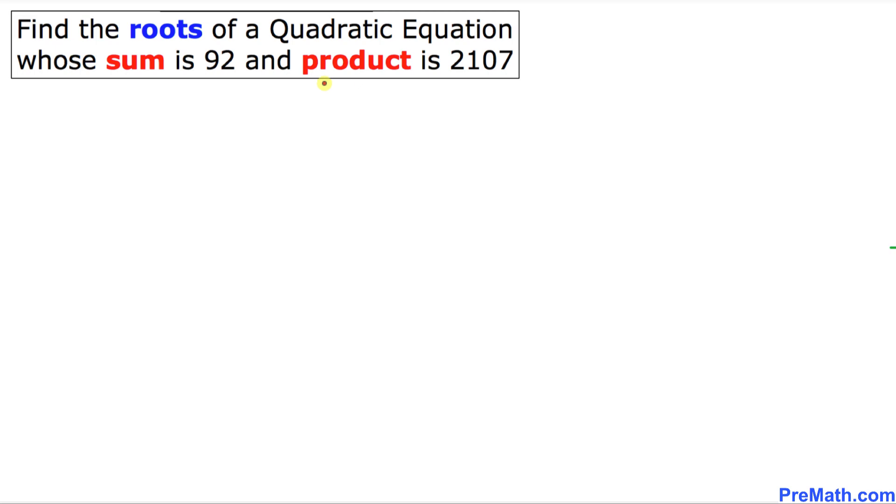The very first thing we are going to do is I'm going to call sum as S, and sum we have is 92 as you can see over here. And I want to call product as P equals to 2107.